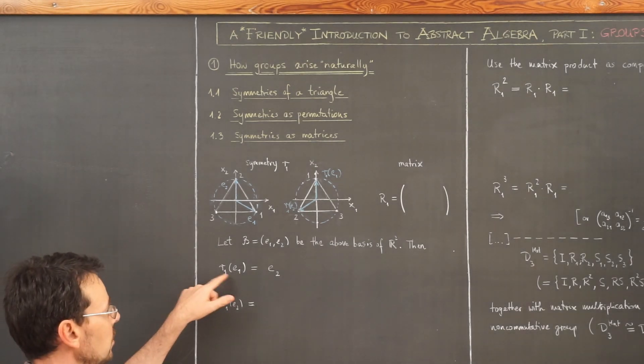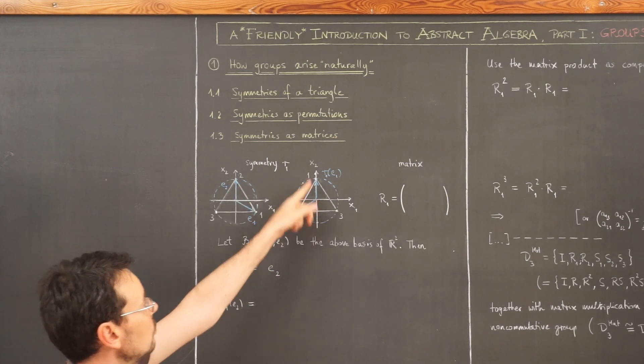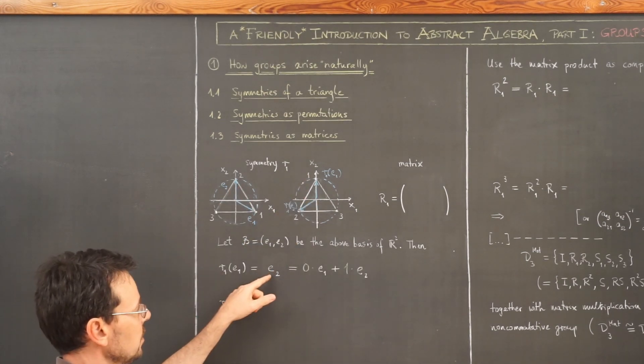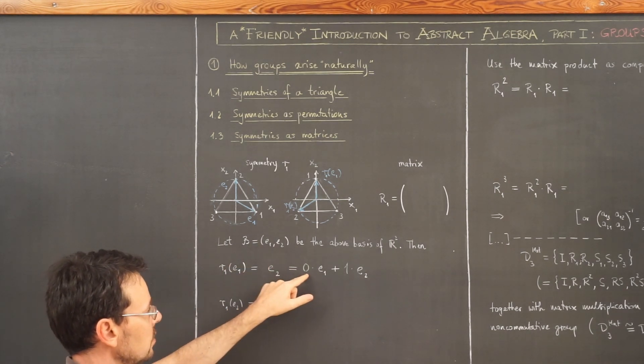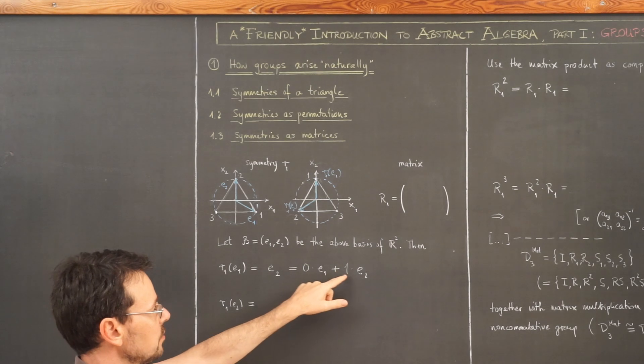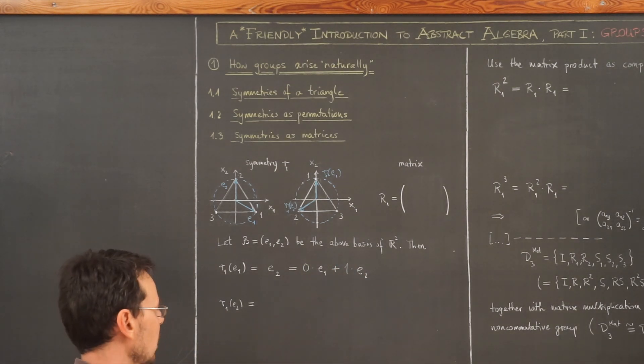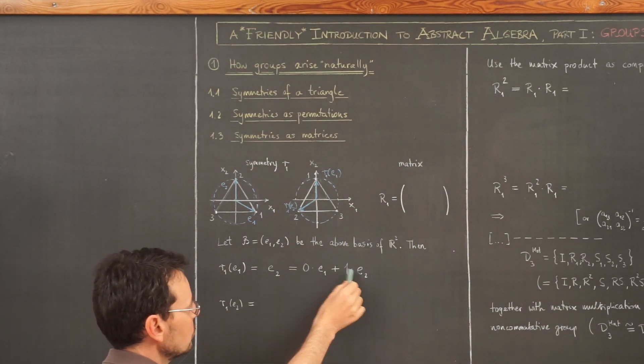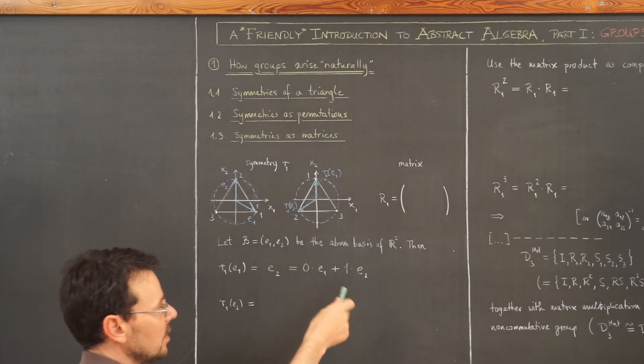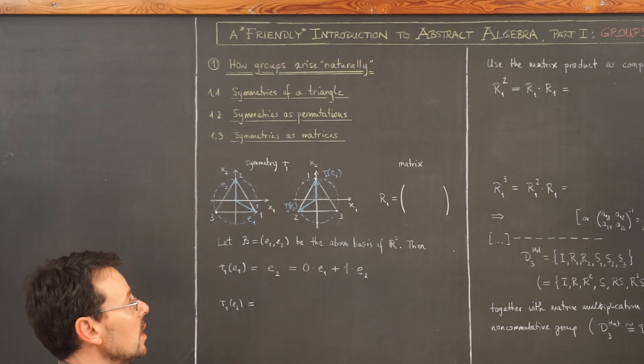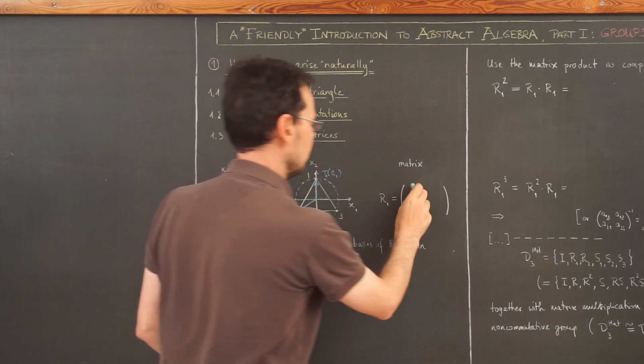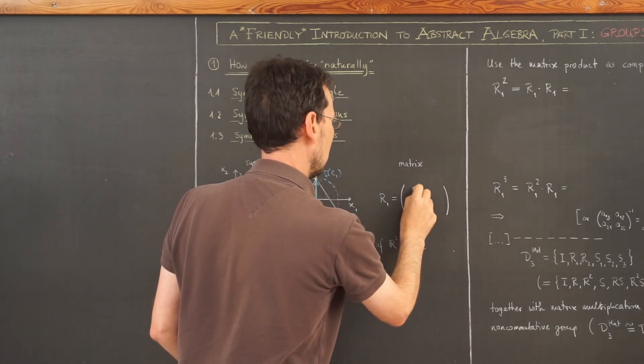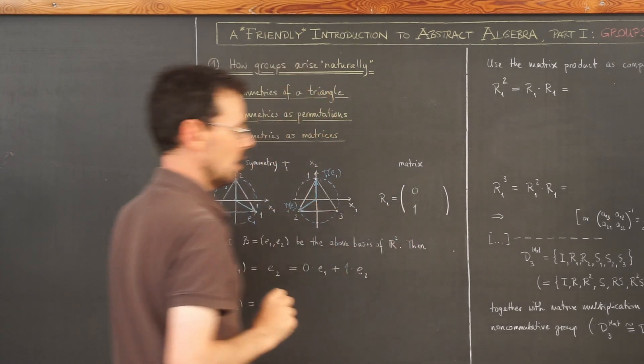So let's do that. So R1 applied to E1 simply gives me E2. And now I express E2 again in this basis. E2 is 0 times E1 plus 1 times E2. And then those two numbers are exactly the entries of the first column of the matrix, which I call capital R1. So we have here a 0 and 1.